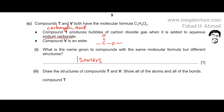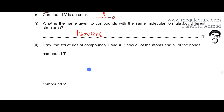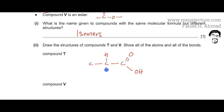In the next part, we are supposed to draw the structures of compounds T and V showing all atoms and bonds. For compound T, remember there are 3 carbons, 6 hydrogens, and 2 oxygens. I know T is a carboxylic acid, so it has a double bond O and OH group. There are 2 hydrogens on the middle carbon atom and 3 hydrogens on the terminal carbon atom.